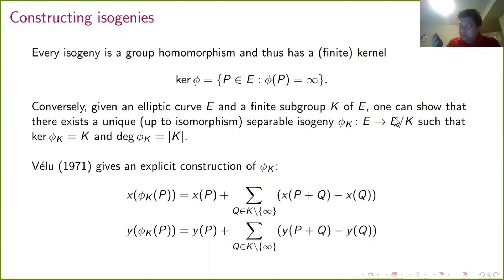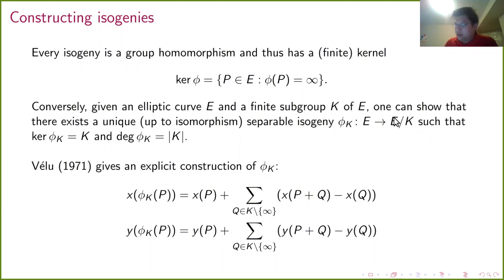The same thing holds for isogenies: if you give me a finite set designated as the kernel, then roughly speaking there's only one isogeny, up to isomorphism, having that set as its kernel. So there's a sort of one-to-one correspondence between isogenies up to isomorphism and these finite sets constituting their kernels. There are formulas — Vélu's formulas from 1971 — that give you the rational maps defining the isogeny having kernel K.